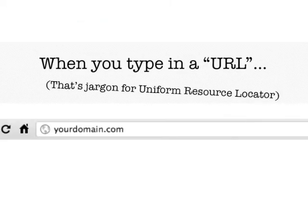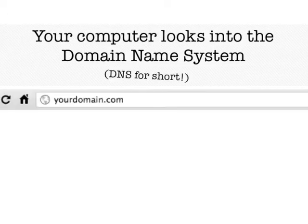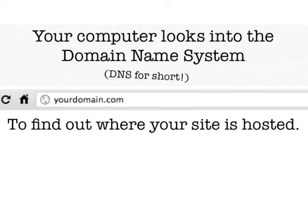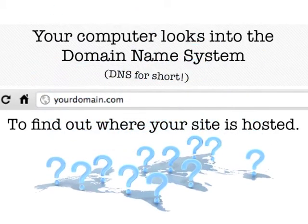When you type in a link into the address bar, also known as a URL — a uniform resource locator — you're actually typing in something that your computer needs to look up. Your computer will look into the domain name system, DNS for short, and find out where the website is located. There are servers all over the world that are hosting the different files that we see on the web.